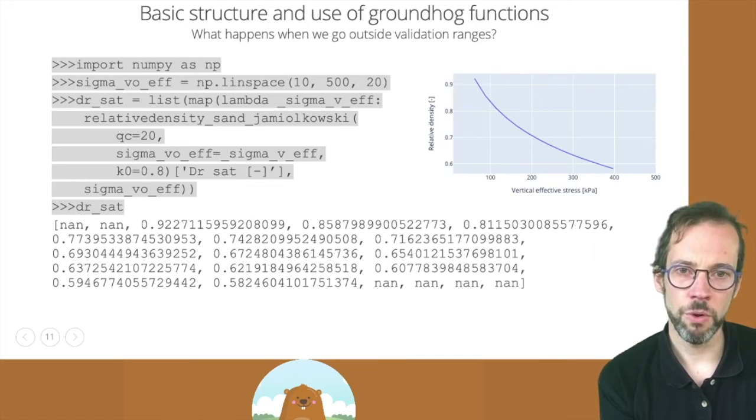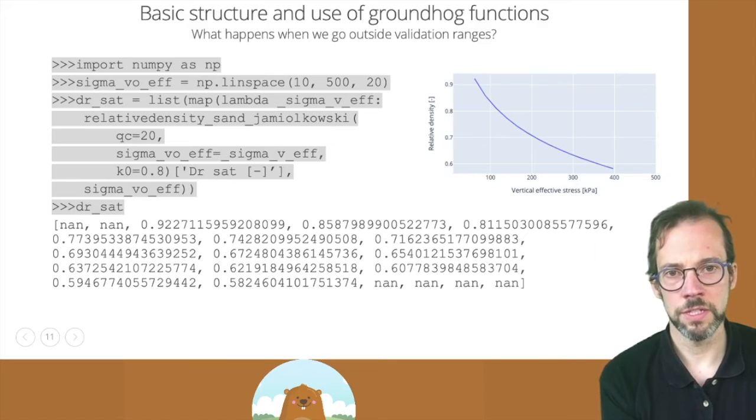This will map all of the vertical effective stresses in the vertical effective stress array to the function and return the saturated relative density. So each element of the input array, the vertical effective stress, will be filled in to the equation, and we will get the corresponding relative density.